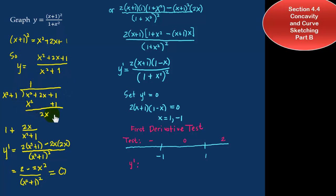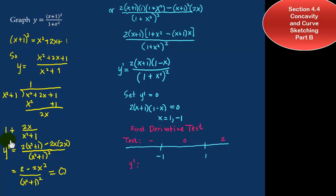If we use long division: x squared plus 2x plus 1 divided by x squared plus 1 — that's just dividing x squared by x squared, which is 1. Then taking the difference, we get 2x as the remainder. So another way of writing y is equal to 1 plus 2x over x squared plus 1.